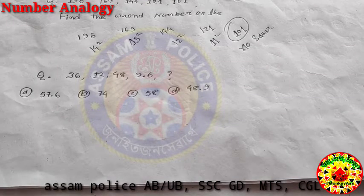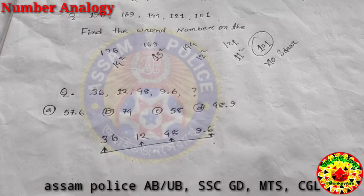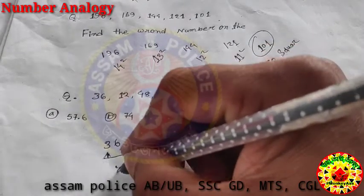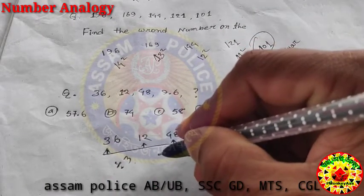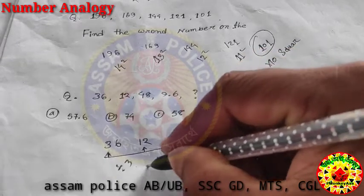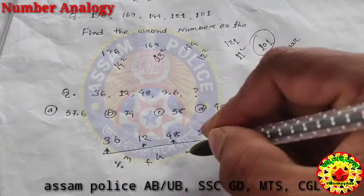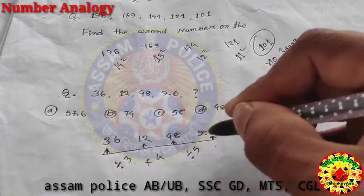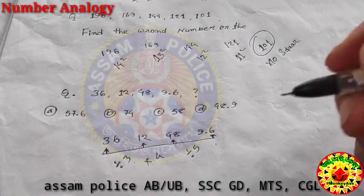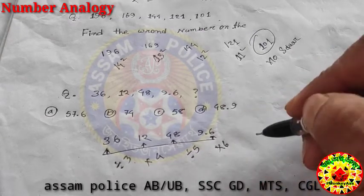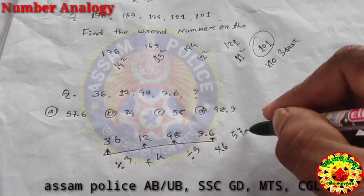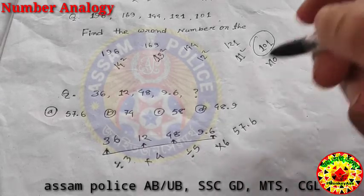Next question: 36, 12, 48, 9.6, find the question mark. The relation: 36 divided by 3 gives 12. 12 multiplied by 4 gives 48. 48 divided by 5 gives 9.6. Then 9.6 multiplied by 6 gives 57.6. So the answer is 57.6. Option B is the right answer.